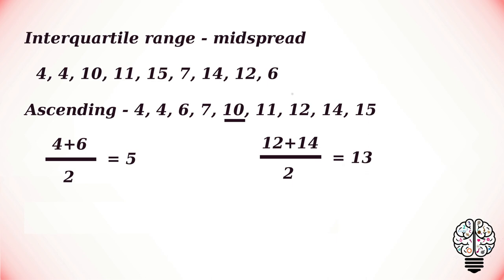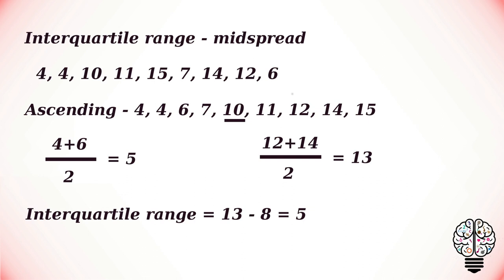To calculate the interquartile range, we find the difference between the middle of the second half and the middle of the first half: 13 minus 5, which gives us 8.